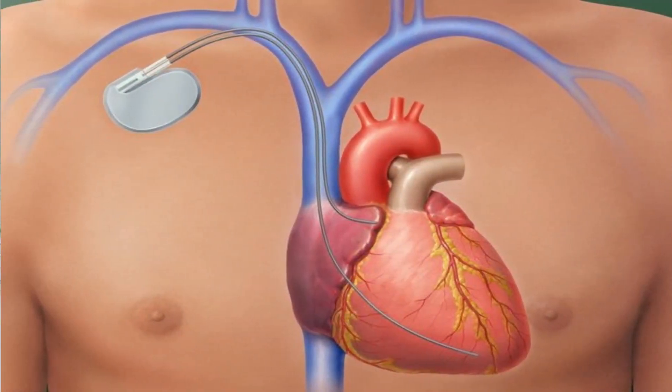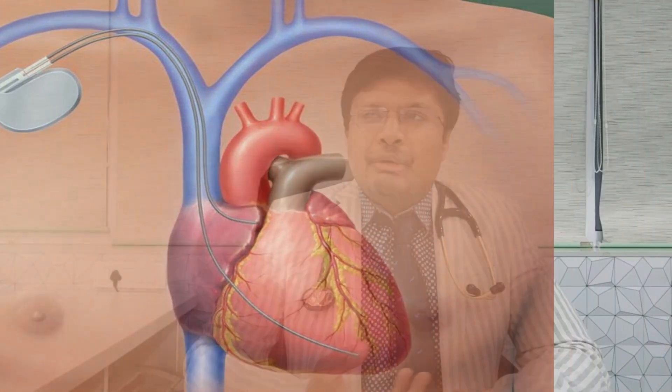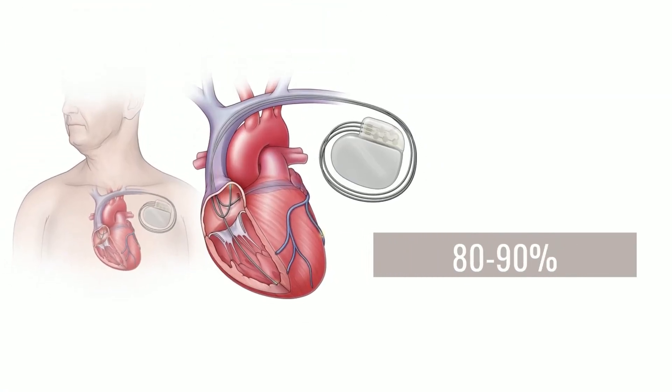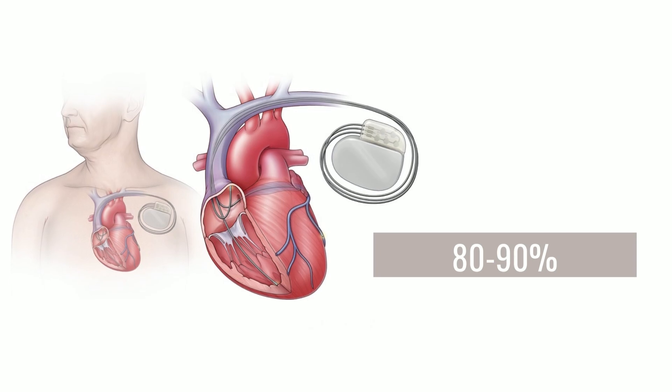The external defibrillator uses a 200 joule shock, while the AICD device delivers only 16 to 20 joules. The current is much lesser, but because it is delivered directly inside the heart, the efficacy is much greater. The success ratio of an AICD reverting ventricular fibrillation to normal sinus rhythm is around 80 to 90%. It may not be 100% effective, but even at 90%, these are the patients whose lives are saved and who are given time to reach the hospital — because there is no other means by which a patient in ventricular fibrillation can reach the hospital in time.